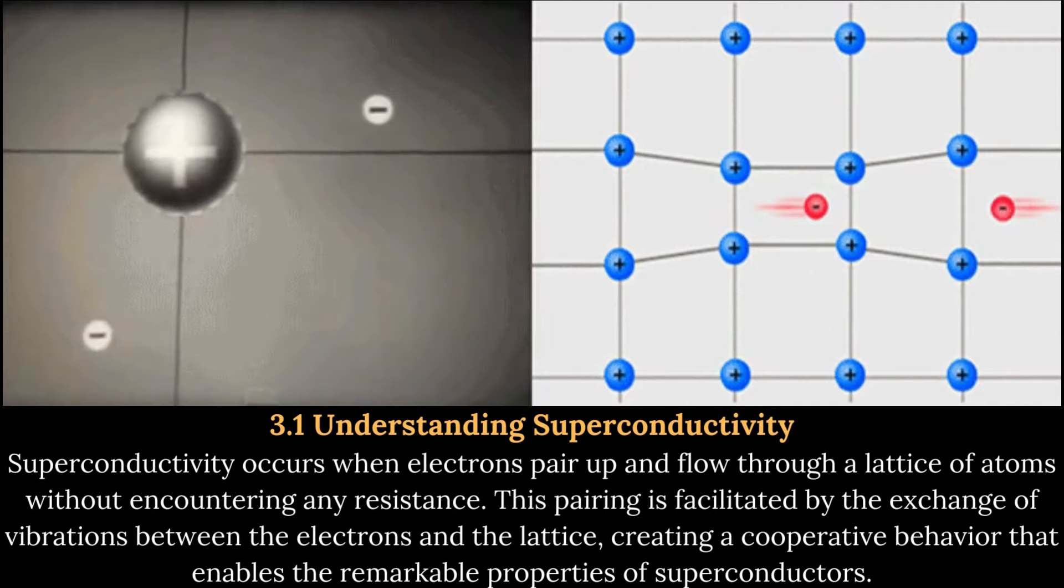Applications of Quantum Levitation. Magnetic Levitation Trains (Maglev): One of the most exciting applications of quantum levitation is in the development of magnetic levitation trains, also known as maglev trains. By utilizing the repulsive forces generated by quantum levitation, these trains can hover above specially designed tracks, eliminating the need for conventional wheels and reducing friction, allowing for faster, smoother, and more energy-efficient transportation.